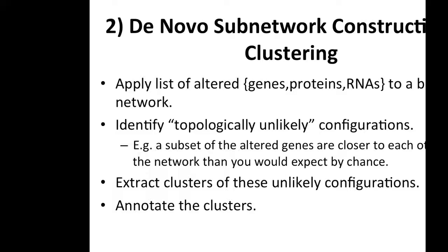Now I'll spend time talking about de novo subnetwork construction and clustering. The way this works is it starts with a large network of interactions. You apply your list of altered entities — genes, proteins, RNAs — to that network to identify topologically unlikely configurations. You have a vast network of all known biology, and you discover that your mutated genes occupy a little corner of that interaction map. These techniques attempt to find those unlikely clusters, extract them, and build little models for you to look at and annotate.